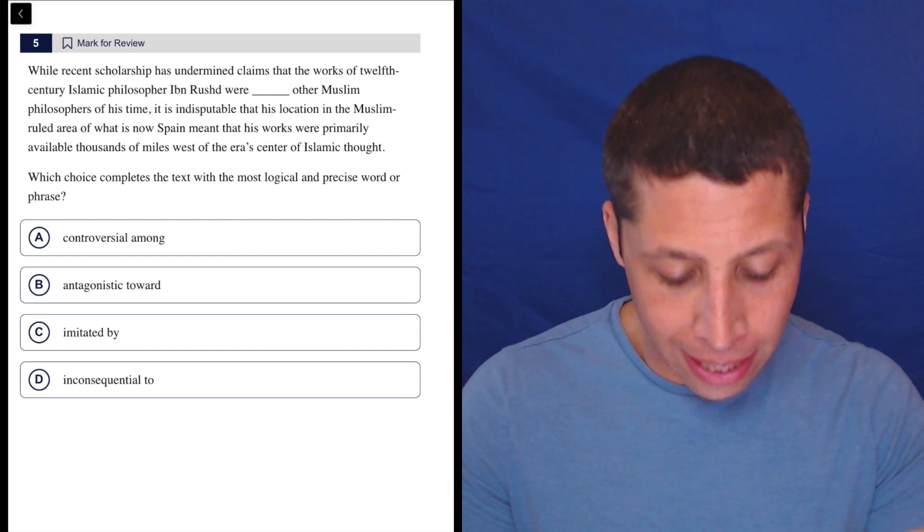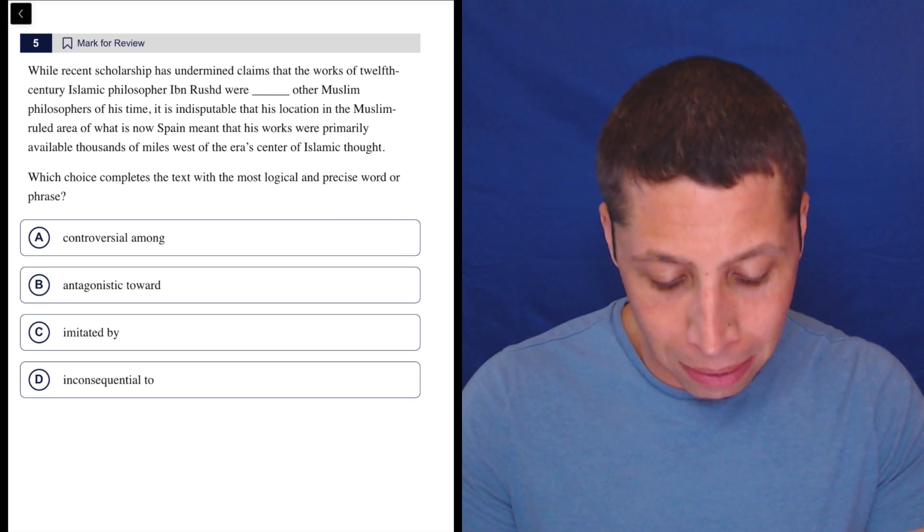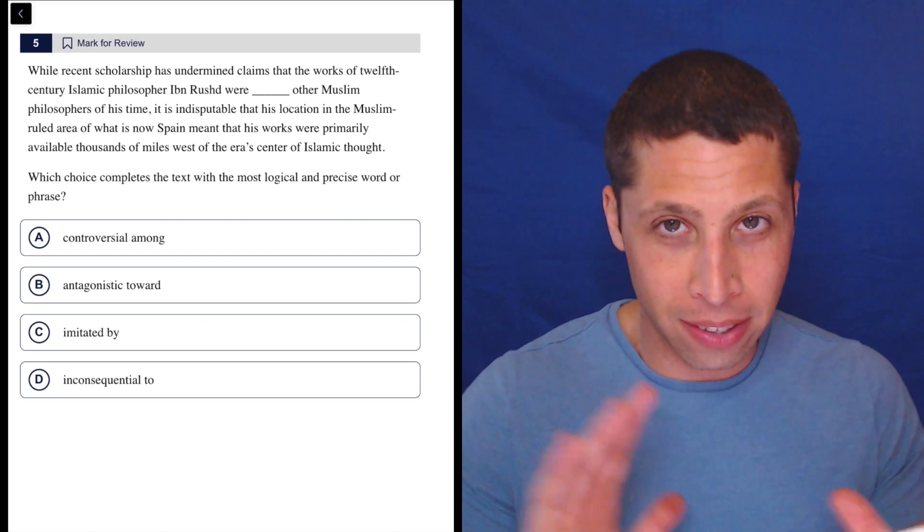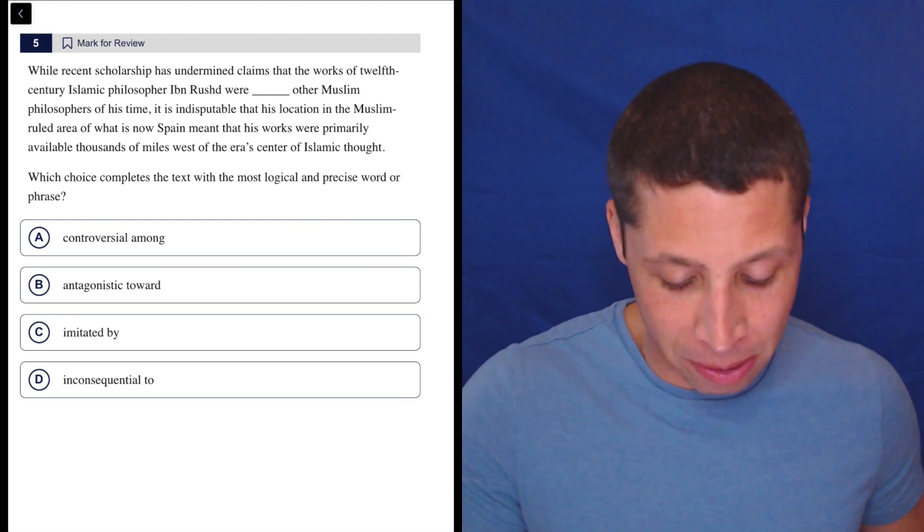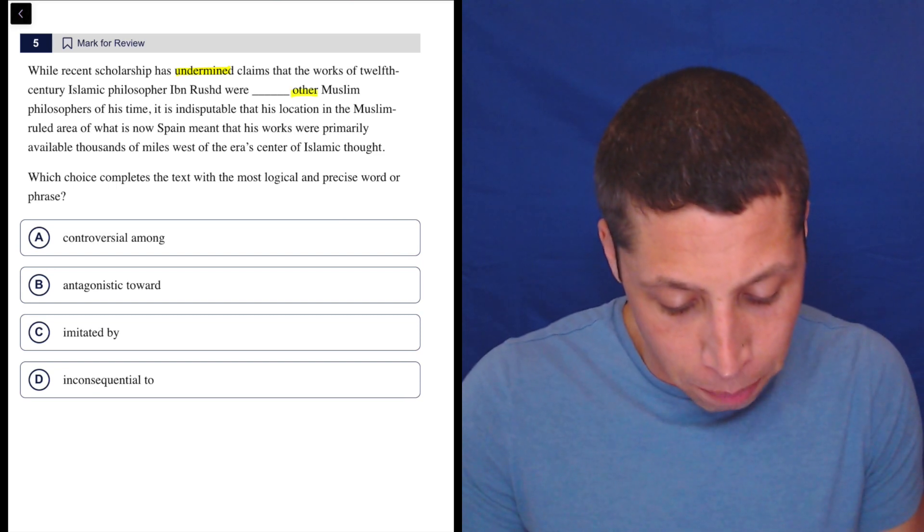While recent scholarship has undermined claims that the works of 12th century Islamic philosopher Ibn Rushd were blank, other Muslim philosophers of his time - okay, so already I'm confused because the blank takes out some piece that makes me understand the sentence. But undermined, okay, there's some sort of comparison.